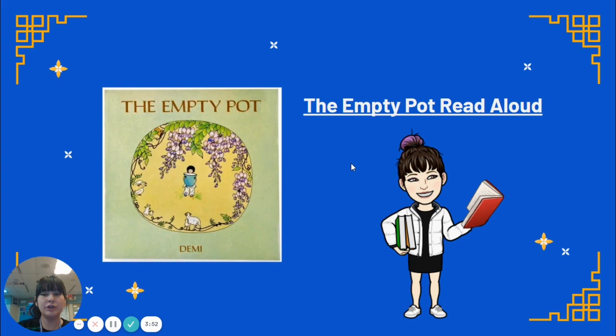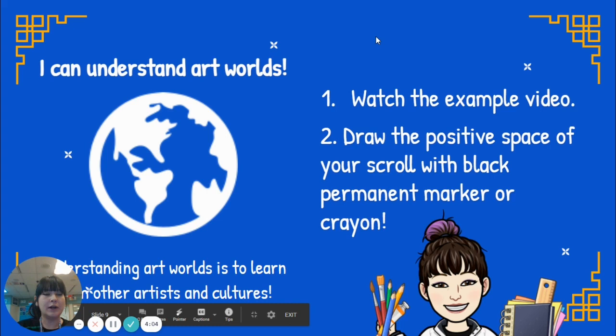Here are today's goals for our project. Our big goal is to understand art worlds — that means to learn art from other artists and cultures. And this week, of course, we're learning from the great Chinese painters. So after this video, please watch the example art video. This week, we're just drawing the positive space of your scroll. I would like you to use black permanent marker or crayon because we're going to be painting over our drawings next week to finish. We're going to paint our negative space next week. So this week, you're just going to do the drawing part. I hope you have fun making your Chinese scroll.